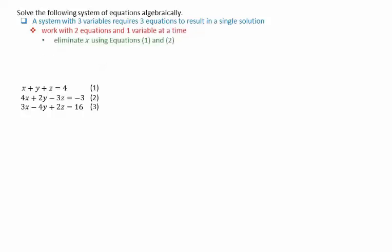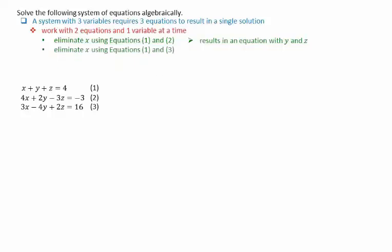We can start out by eliminating x using equations 1 and 2. This will result in an equation with y and z. We can then eliminate x again, this time using equations 1 and 3, resulting in another equation with y and z.